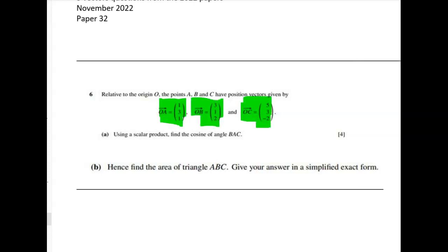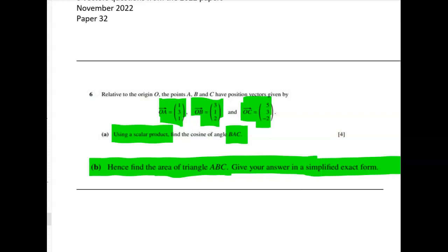OB and OC. The first thing we need to do is we need to find the cosine of angle BAC and we're told to use the scalar product to do it, which is pretty obvious. So I think that's a very easy four marks. And then the next thing that we've got to do is to find the area of triangle ABC.